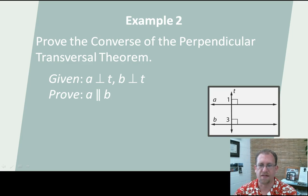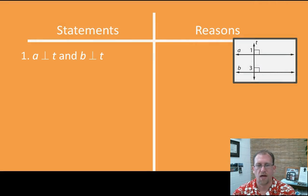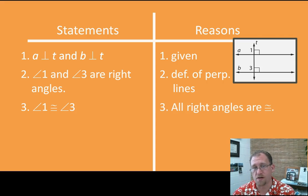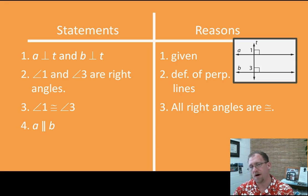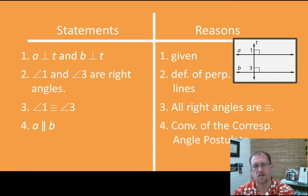Let's do some work with this. We have a diagram where lines A and B look like they're parallel, but we need to prove that they are. We are told that angle 1 and angle 3 are right angles — they're perpendicular. So I've been given that A is perpendicular to T and B is perpendicular to T. That means angle 1 and angle 3 are right angles by the definition of perpendicular lines. Since they're both right angles, they're congruent to each other because all right angles are congruent. So now I can say A and B are parallel to each other. The reason is that the corresponding angles are congruent — that is the converse of the corresponding angle postulate.